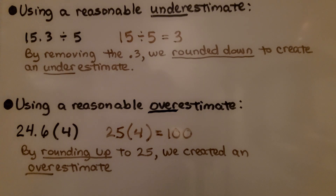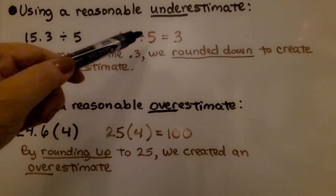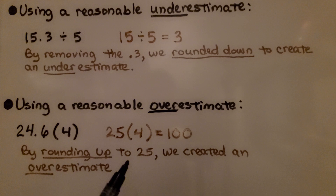An underestimate is lower than the actual amount, and an overestimate is more than the actual amount.